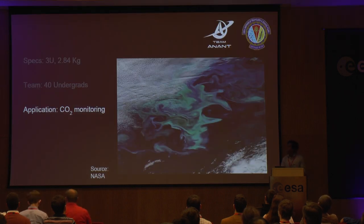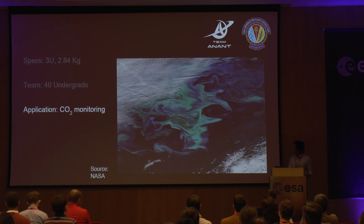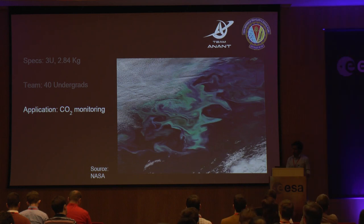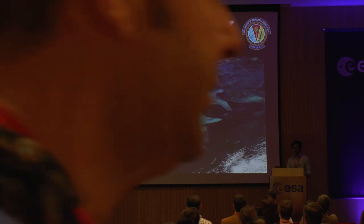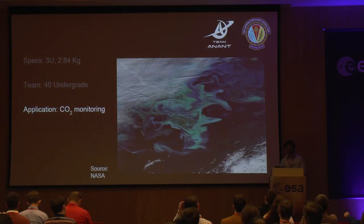Why are we doing hyperspectral imaging? It has a lot of applications, but the main one for us is carbon dioxide monitoring. The image shown here is of a phytoplankton bloom somewhere south of Iceland, and it looks really beautiful. The phytoplankton bloom is directly proportional to the amount of carbon dioxide in the atmosphere — using a hyperspectral image, you can count phytoplankton in an area and determine how much CO2 is present.